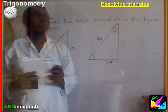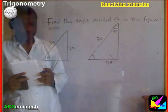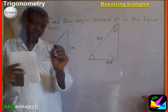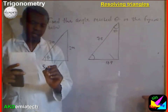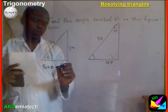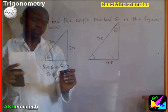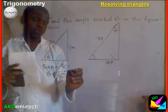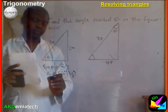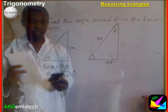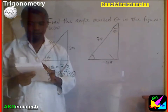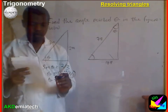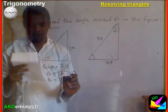Find the angle marked theta in the figure below. I have theta — this is the opposite and hypotenuse — so sine theta equals 2 over 3. Theta is the arcsin of 2 over 3. I punch it on my calculator and it gives 41.8 degrees.